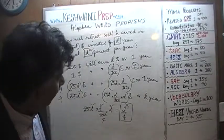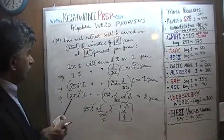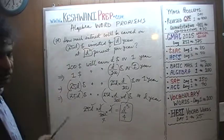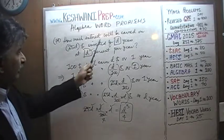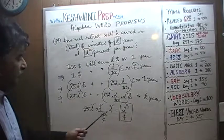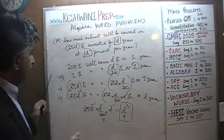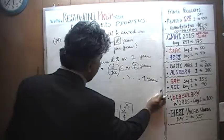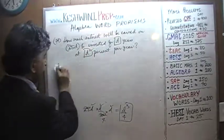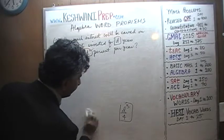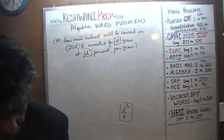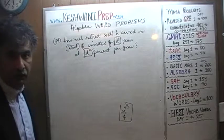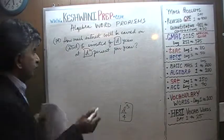Enough talk — let's do it. I need room on the board, so I'm going to erase the work but keep the problem. I'll plug in a value for D — it really doesn't matter what you plug in. I'm just going to plug in a number.